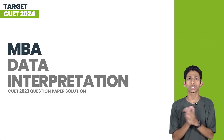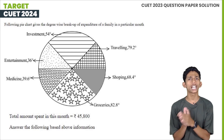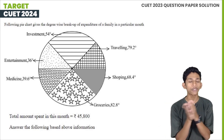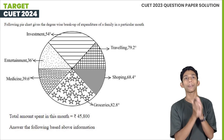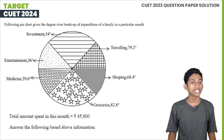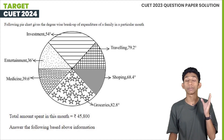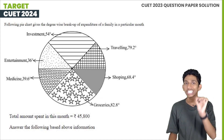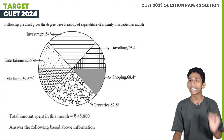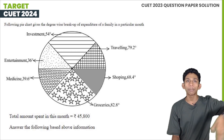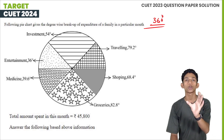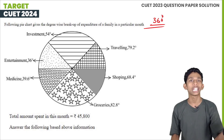I will discuss the first question. The first question is to discuss using a pie chart. If the pie chart gives degree-wise breakups, then we work with the total angle being 360 degrees. If you are given a percentage, you work with total; if you are given a total angle, we work within 360 degrees.